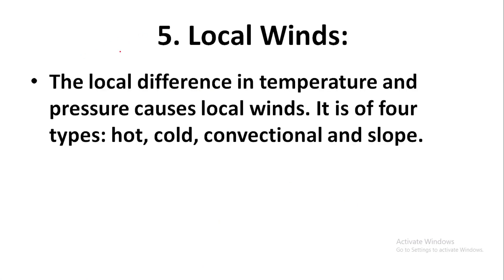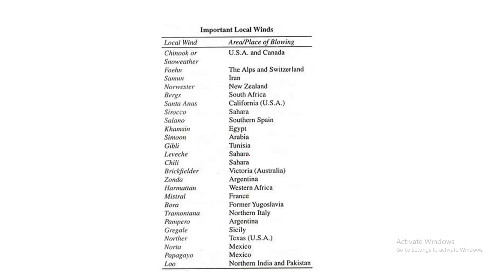Number five: local winds. Local differences in temperature and pressure cause local winds. They are of four types: hot, cold, convectional, and foehn. Here are some important local winds throughout the world: Chinook — a warm dry weather wind in the US and Canada.